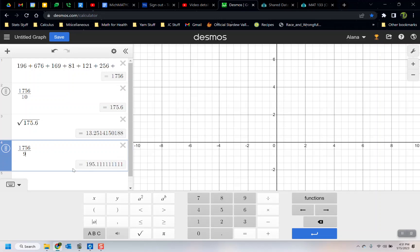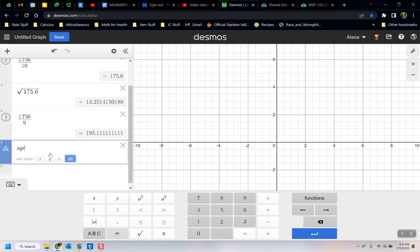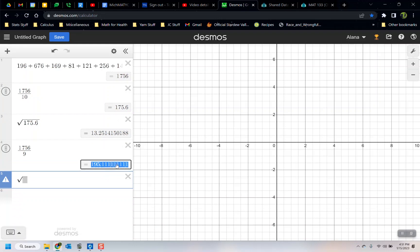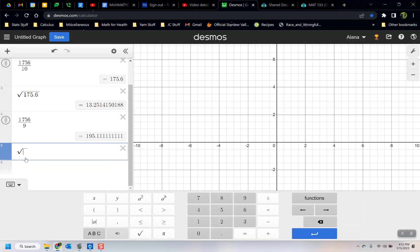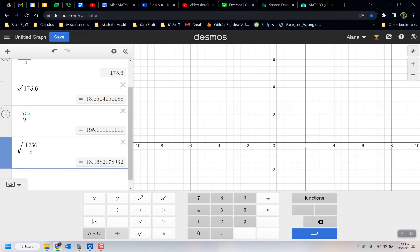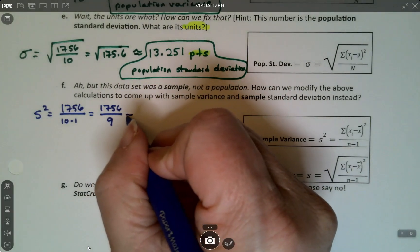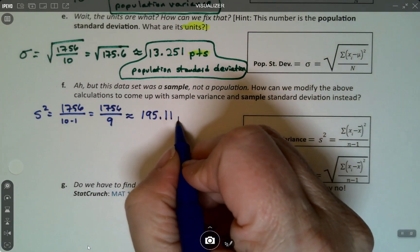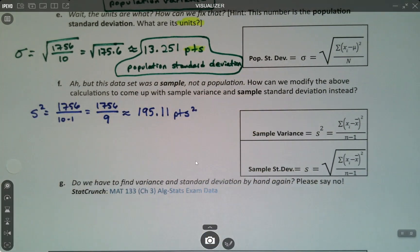So 1756 divided by 9 is 195.1. Then for the standard deviation, which is my next step, I want the sqrt, the square root, of that value. I can actually copy and paste the value if you want, or you could also just type the fraction in here—1756 divided by 9. So you get 13.968. So this was 195.11, points squared.